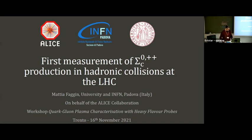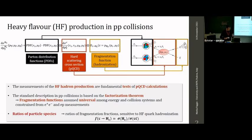The measurement of heavy flavor hadron production in proton-proton collisions are fundamental tests of perturbative QCD calculations. The standard description for heavy flavor hadron production in proton-proton collisions is based on a factorization approach, according to which the production cross section of a hadron can be factorized into three independent terms.